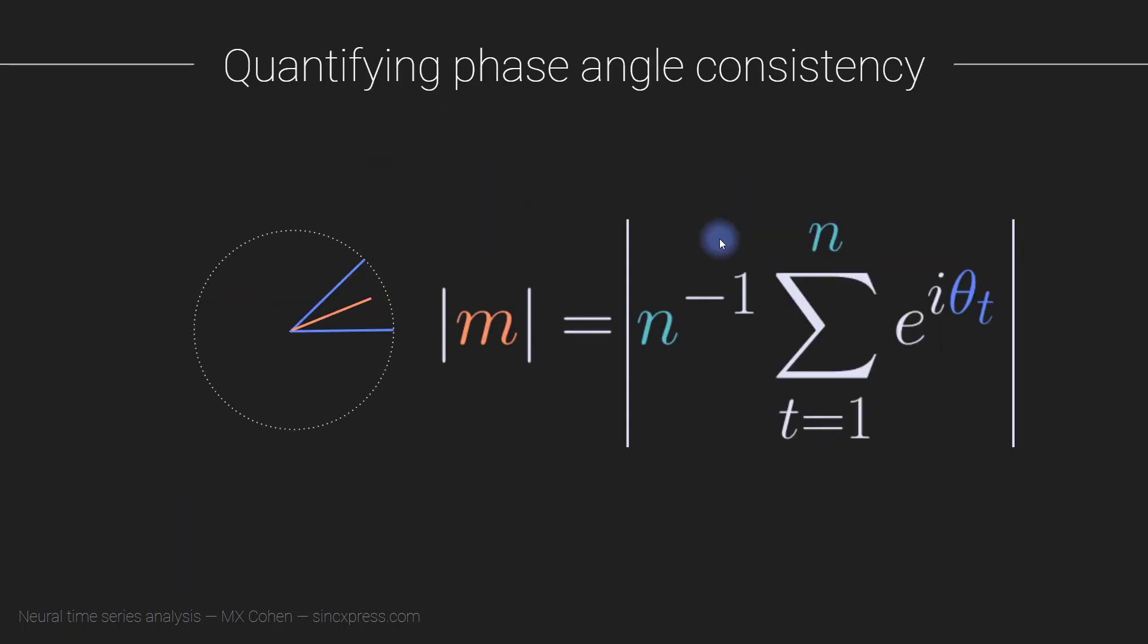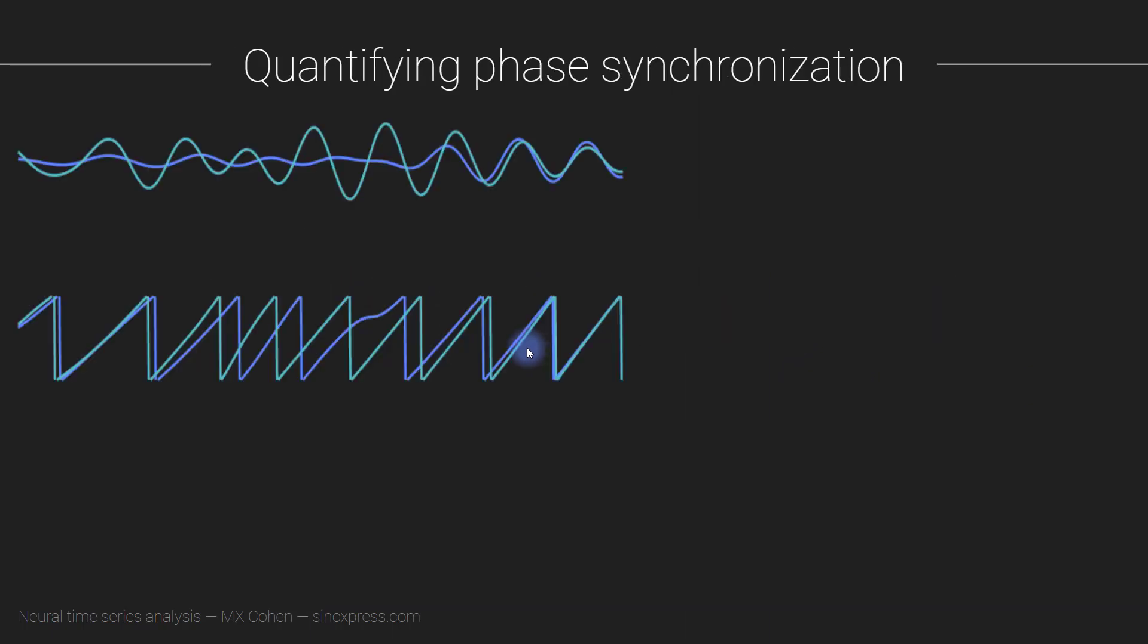Here we have the formula for ITPC, which is essentially what I just explained. We take all the individual phase angles, we Eulerize them, so we put them in Euler's formula, and then we add them all up. We're adding up complex vectors where the length is one and the angle is defined by these angles. Then we divide by n, and that gives us the average vector, and we take the length of the average. That was definitely enough review of ITPC.